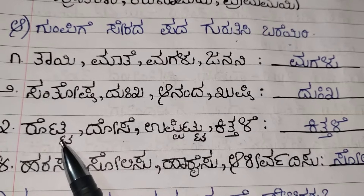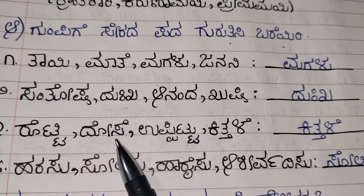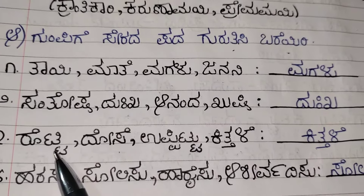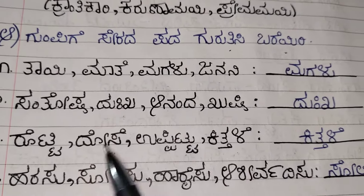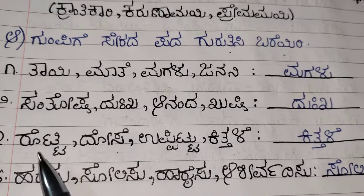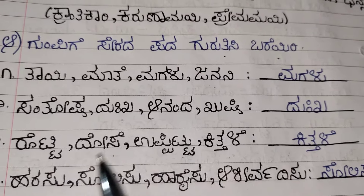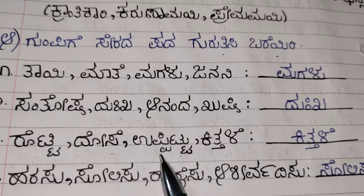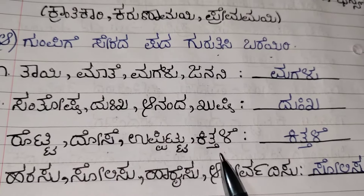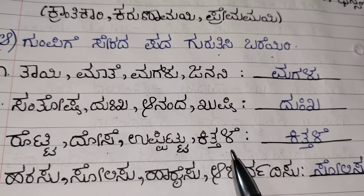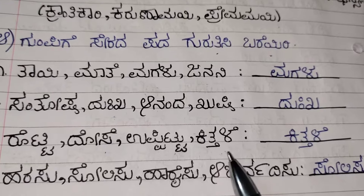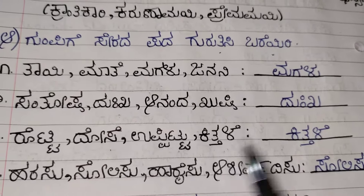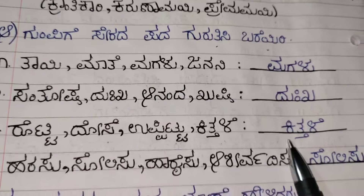Third one: Rotti, Dose, Upittu, Kitale. Rotti, Dose, Upittu — these are the items we prepare for breakfast. Kitale means it's orange, it's a fruit. Orange is a fruit. So here Kitale is the odd one out.